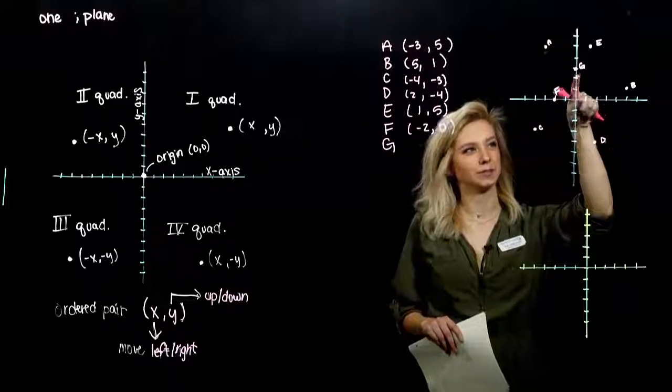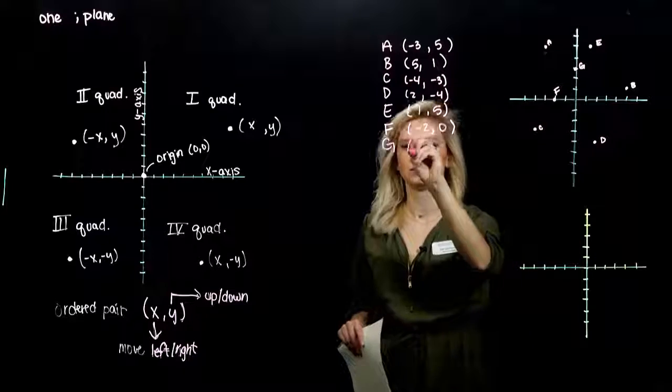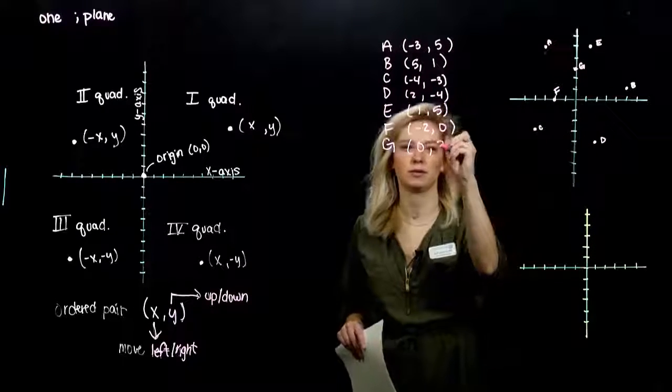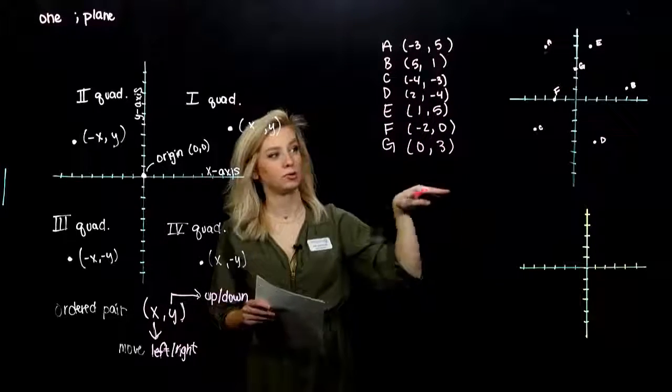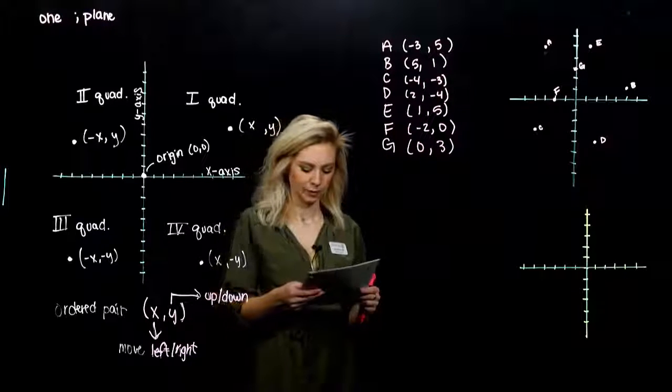And what about G? How many units have I moved left and right from the origin? Zero. But I've moved up one, two, three units along the x axis. Excuse me, along the y. We didn't move along the x. Now we're moving along the y.